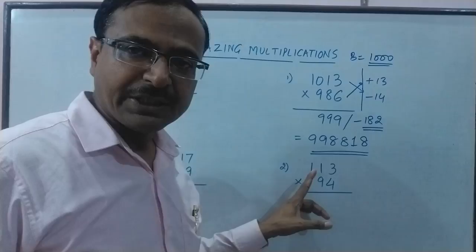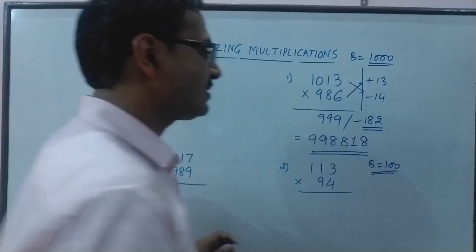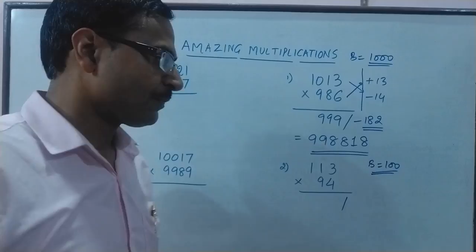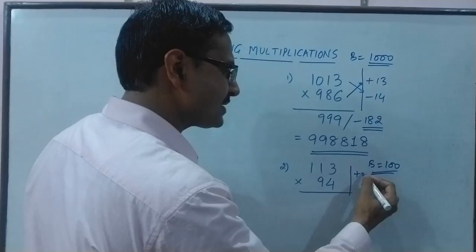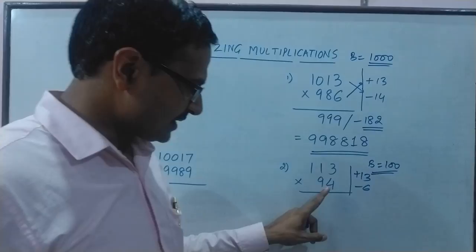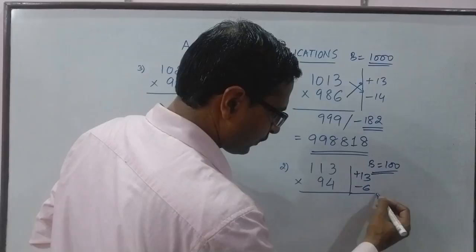Let's see another question, a comparatively simpler one where we have the base quantity as 100. Base is 100 that means we should have two digits on the right hand side. Here we have the surplus as 13 so plus 13 and the deficit is 6 so minus 6. If you multiply these two you are going to get 78 so this is negative 78.